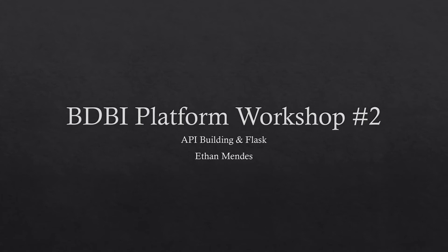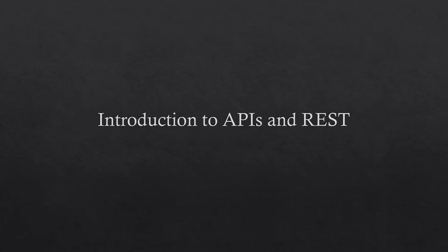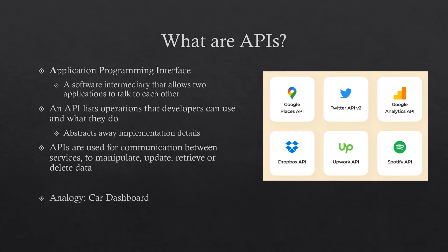Hi everyone, welcome to the second platform workshop. Today we will be going into API building, and specifically how we can do this with the Flask framework. First we will discuss APIs and REST. API stands for application programming interface — essentially a software intermediary that allows two applications to talk to each other. An API lists operations that the developer can use, and the developer can call each of these functions or methods to get the desired operation or behavior.